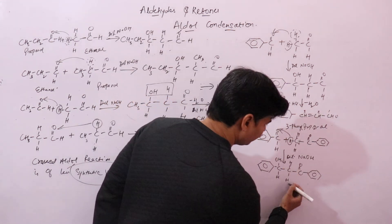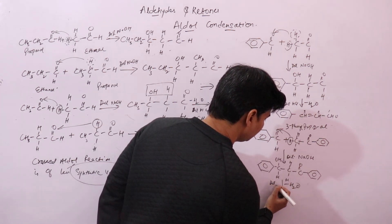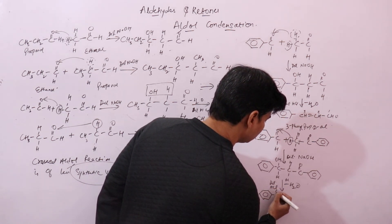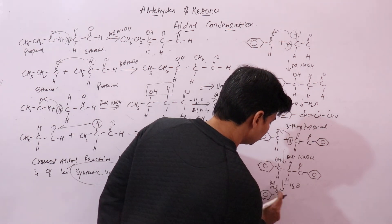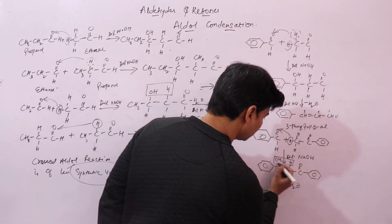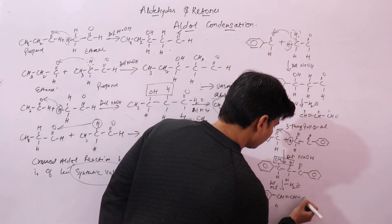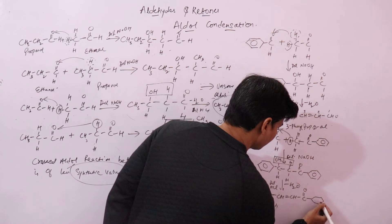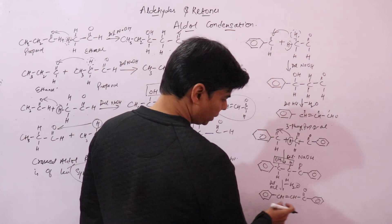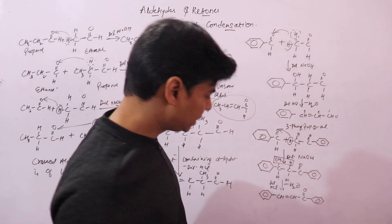This beta-hydroxy ketone then undergoes dehydration in presence of dilute HCl, where one molecule of water is eliminated, to form an unsaturated ketone. This unsaturated ketone is more stable than the beta-hydroxy ketone.